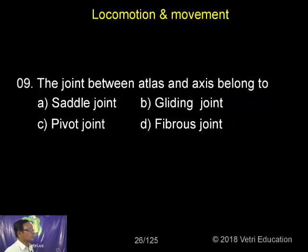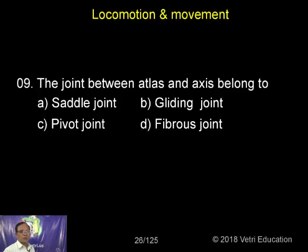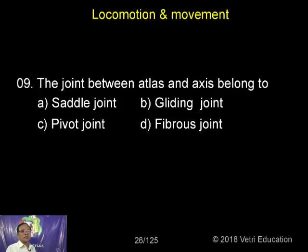The joint between atlas and axis belongs to a pivot joint. Now the axis — you can see it has an odontoid process, and the odontoid process is acting as a lever, on which is placed what is called the atlas.